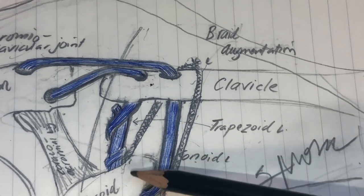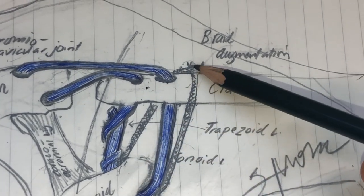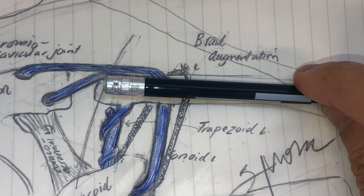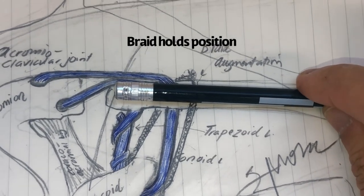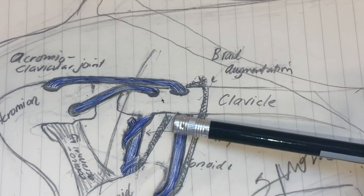So the braid goes around the coracoid, around the back of the clavicle, and then I tie it. It will stay, and it holds the clavicle down so that I can then do the anatomical reconstruction.